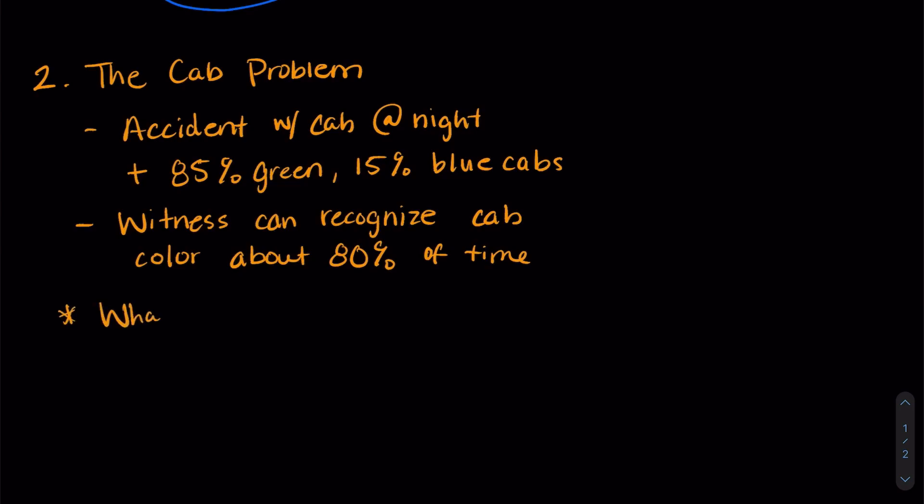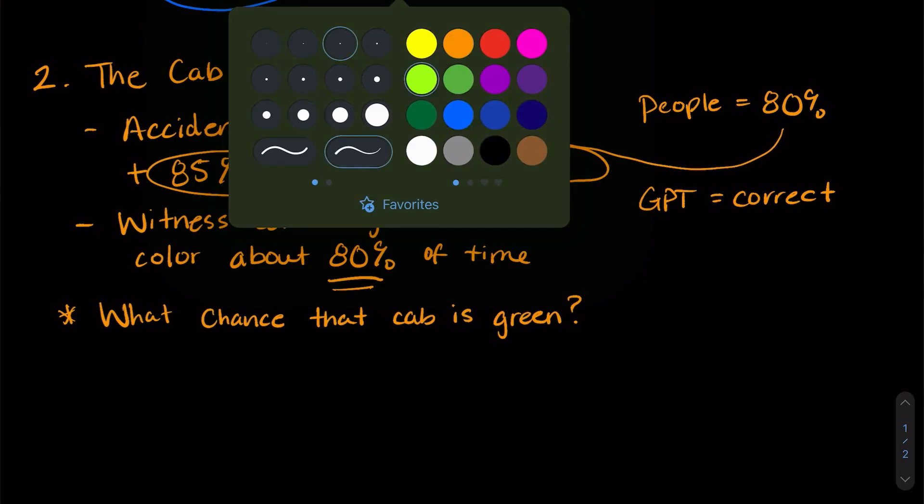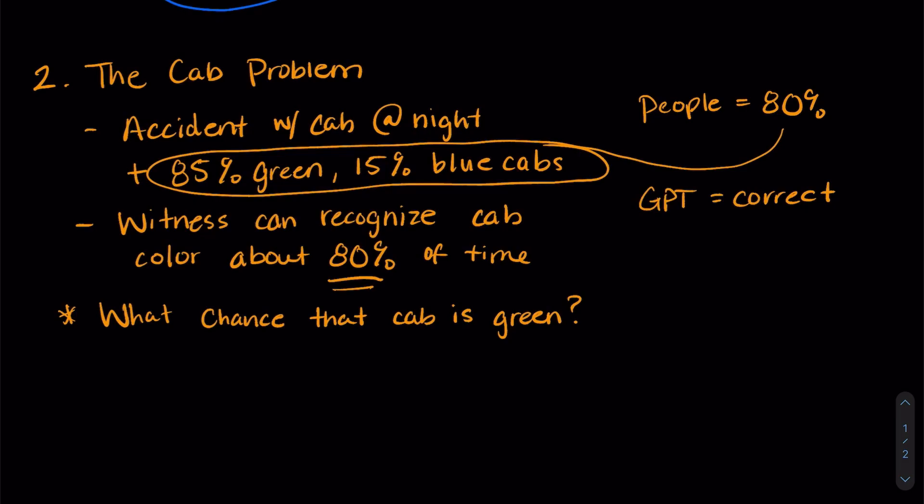So the question is what is the chance that the cab is green? Now the most common answer here that people give is 80%. The reason that people give that answer is because they ignore this base rate and just use the last information that they were given. Now GPT generally gets this correct because it actually calculates the statistics combining the base rate and whether the witness can recognize things.